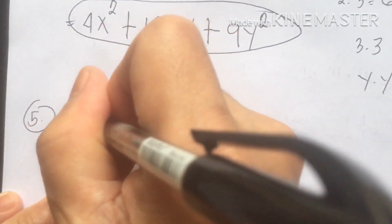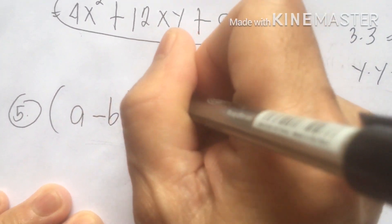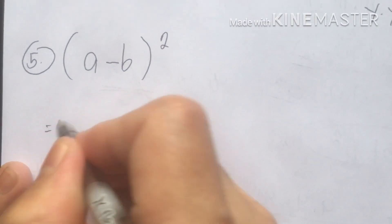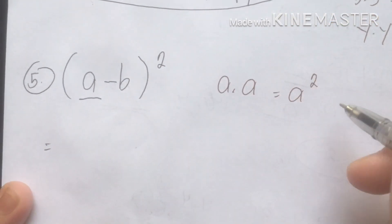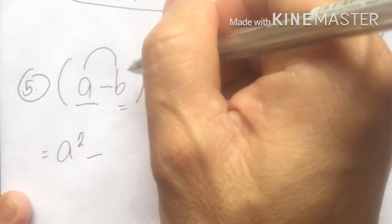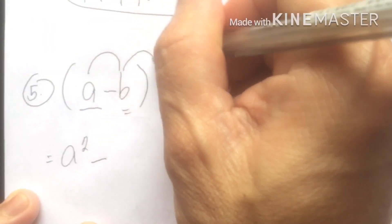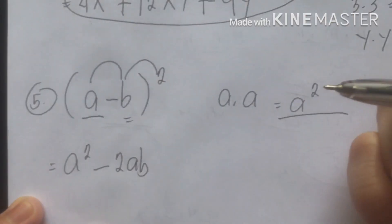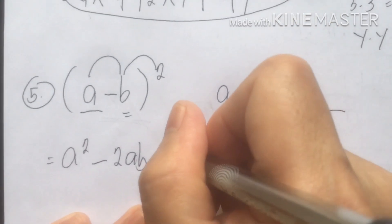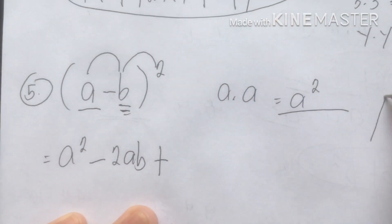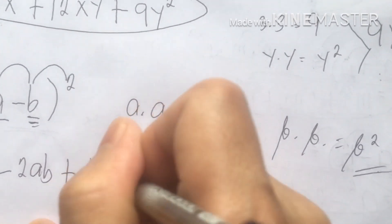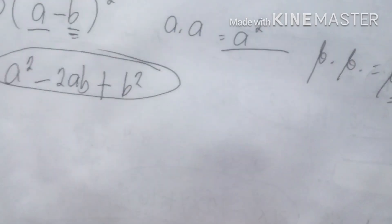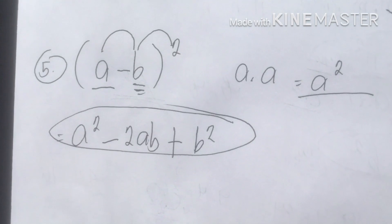Number five: (a − b) squared. Same procedure — first term: a times a equals a squared. Then first and second terms multiplied: a times b is ab, times 2 gives minus 2ab. Then the last term: b times b gives b squared. So the answer is a squared minus 2ab plus b squared. That's simple — that is number five.